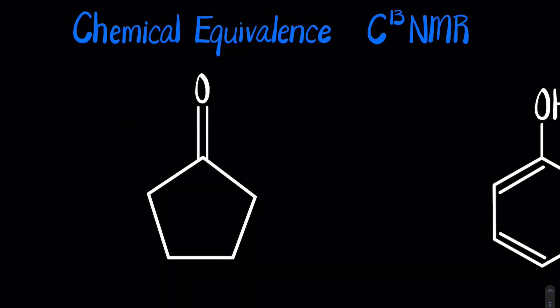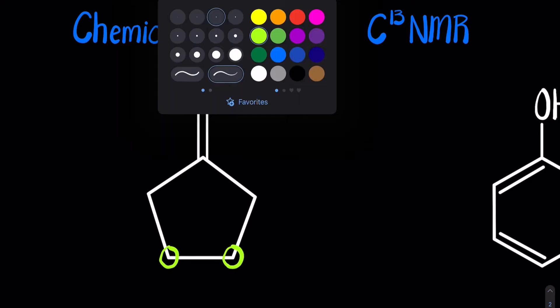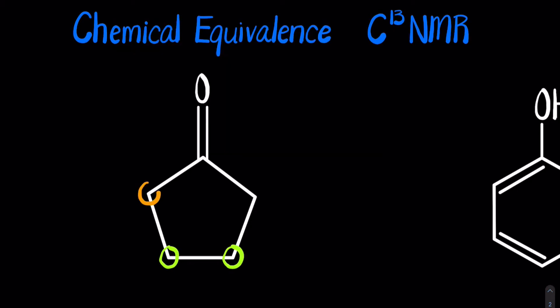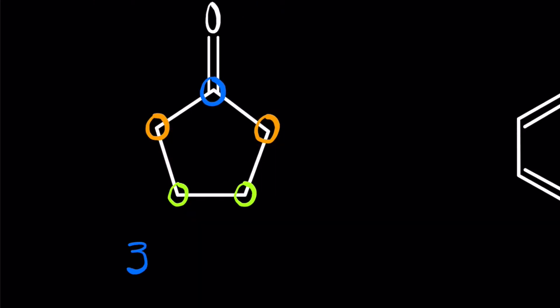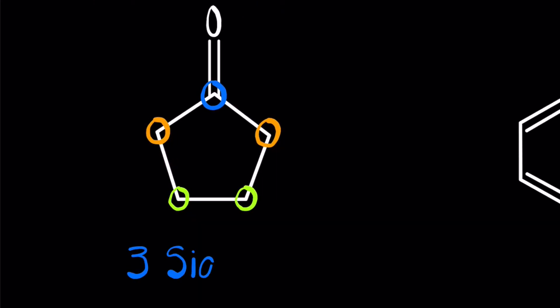Let's run through a couple of C13 NMR examples. Keep in mind chemical equivalence and symmetry. These carbons are going to be chemically equivalent to one another. These two carbons will be chemically equivalent to one another, and this carbon is going to give off a sole peak. Therefore, this molecule overall will have three signals.